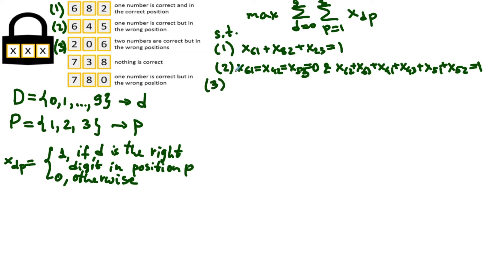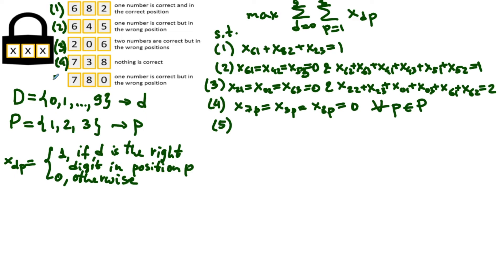Now I know how to get the constraints for the third row. Each of the variables x two one, x zero two and x six three is zero, and x two two plus x two three plus x zero one plus x six one plus x six two equals two. Next one is easy. Nothing is correct in the seven three eight combination. So x seven p equals x three p equals x eight p equals zero.